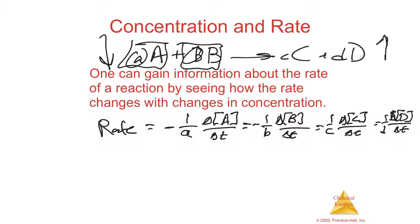But you cannot always guess what the rates are going to be based upon just the coefficients. You know that the rates are equal to each other, so if you knew the rate of one, you'd know the rate of the other. However, you wouldn't be able to guess from the balanced equation what the actual rate is. You actually have to do experiments and find out what the concentrations are doing at various times.